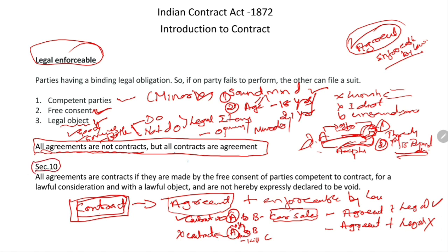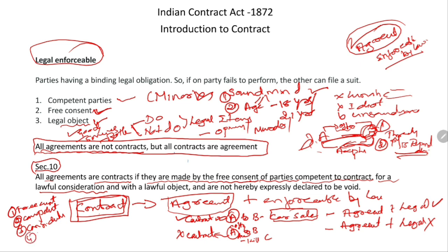Section 10 states: all agreements are contracts if they are made by the free consent of the parties, competent to contract, for a lawful consideration. So it is not only agreement that is essential — there should also be free consent, competent parties, consideration, and a lawful object. Then only it is called a contract; otherwise it lies only as an agreement. All agreements are not contracts, but all contracts are agreement — remember this with Section 10 and the two examples.